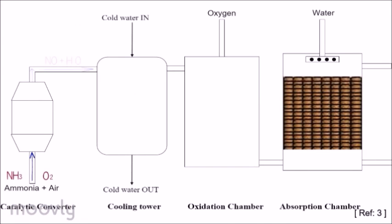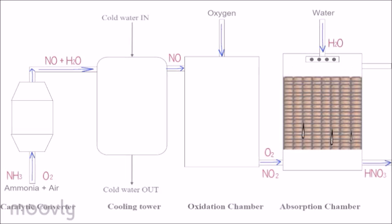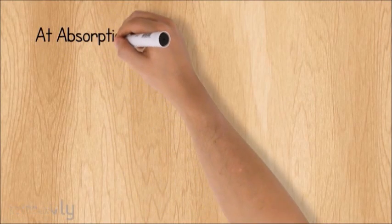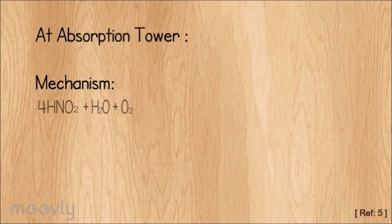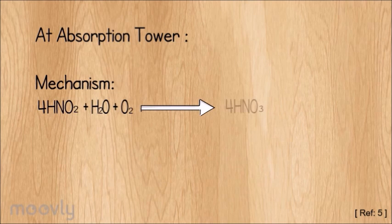The absorption tower is a stainless steel tower packed with acid-resistant quartz. The water dissolves the nitrogen dioxide and non-reacted oxygen to give dilute nitric acid. Dilute nitric acid can be synthesized from ammonia through the Ostwald process.